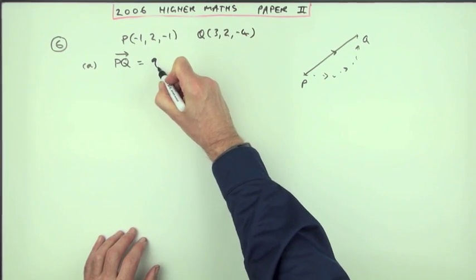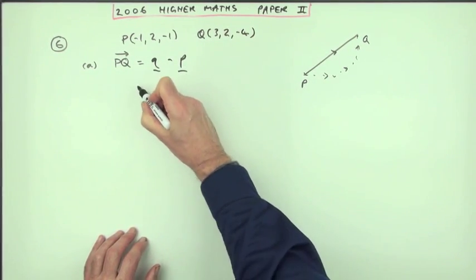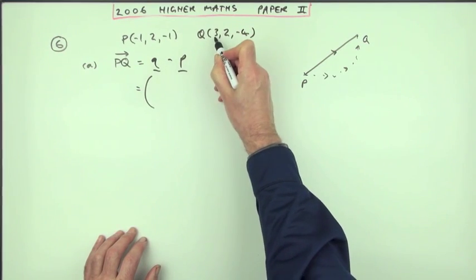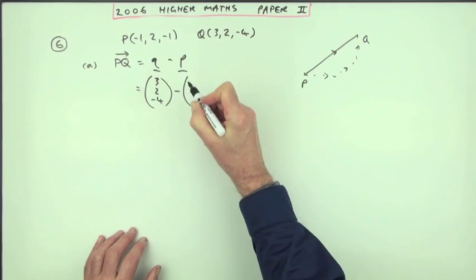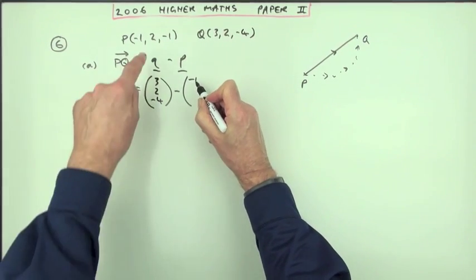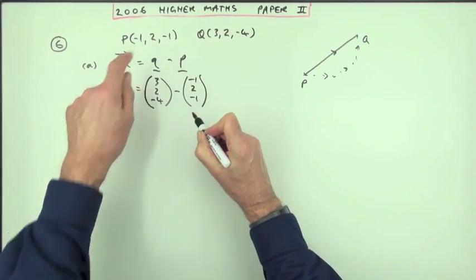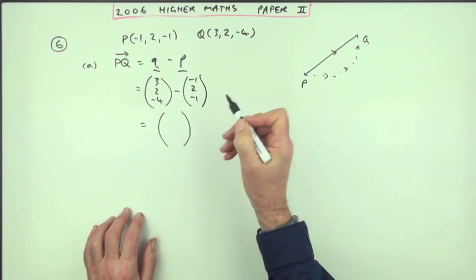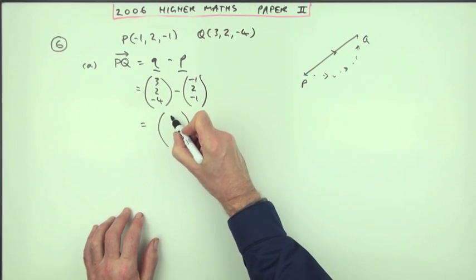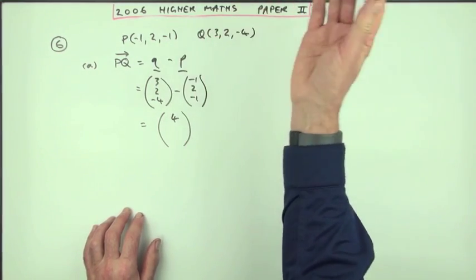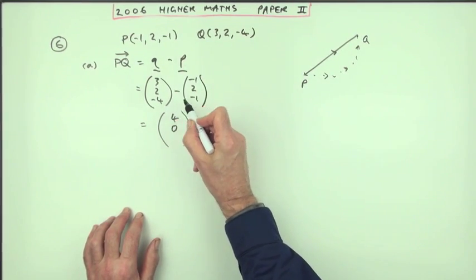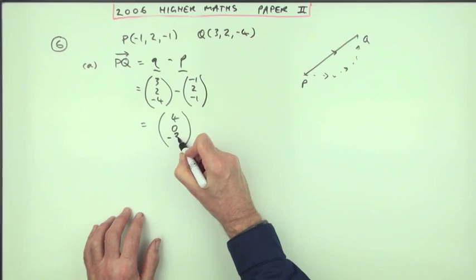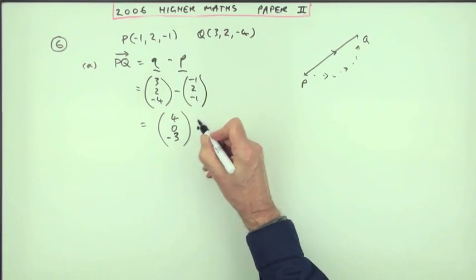PQ would be Q minus P in terms of the position vectors. Q is 3, 2, negative 4. Take away P, which is negative 1, 2, negative 1. Thereby arriving at the obvious result. 3 take away negative 1 is 4, because it's 4 forward. 2 take away 2 is 0, because there's no move. Negative 4 take away negative 1 is negative 4 plus 1, which is negative 3. So there's one mark.